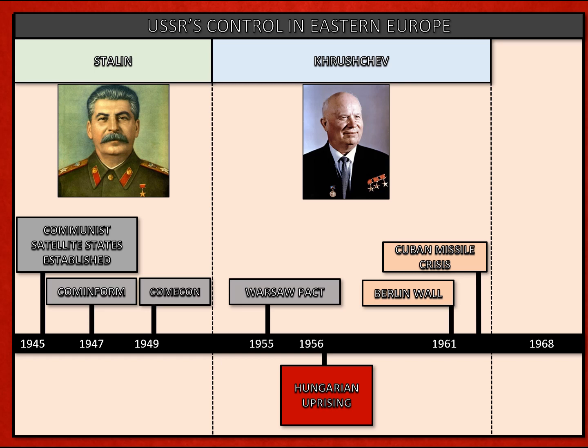After Stalin's death in 1953, with Soviet control firmly established, Nikita Khrushchev oversaw a period of relative calm. It's in this period that our first event is cited — the Hungarian uprising of 1956 — which quickly followed the establishment of the Warsaw Pact, a communist defensive alliance, their equivalent of NATO. All communist states signed up to this, and it made sure that Moscow could dominate militarily.